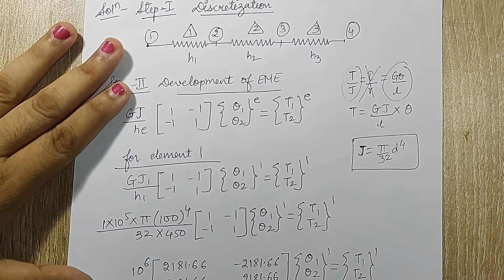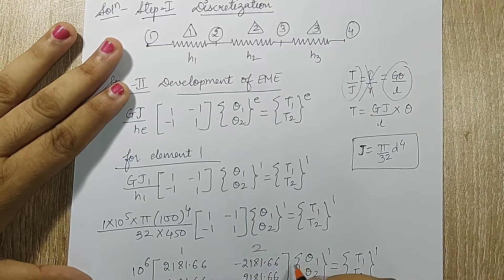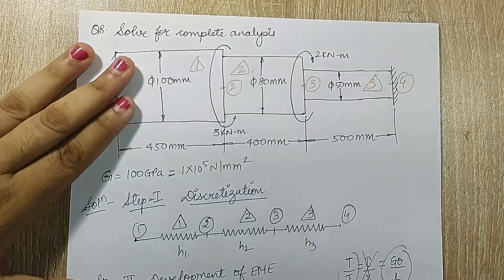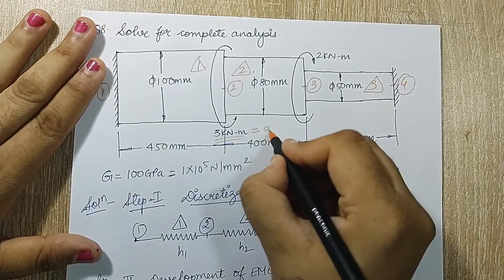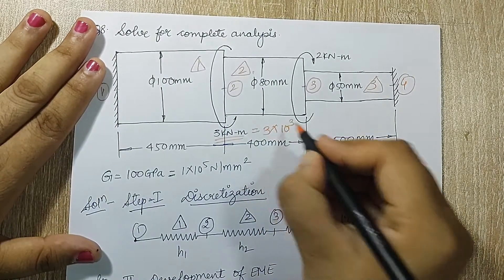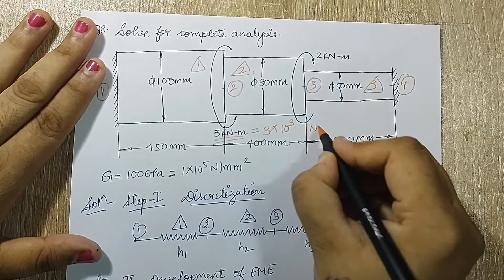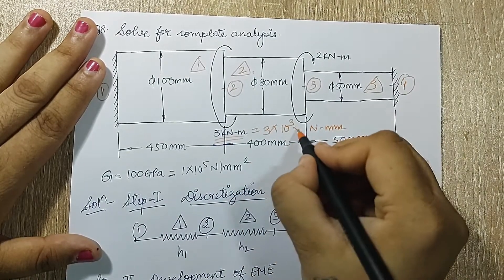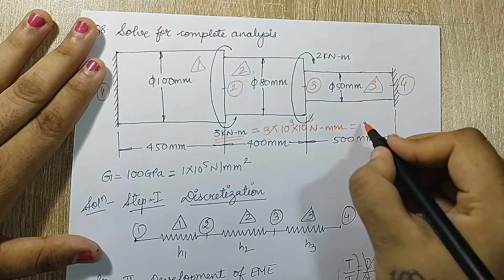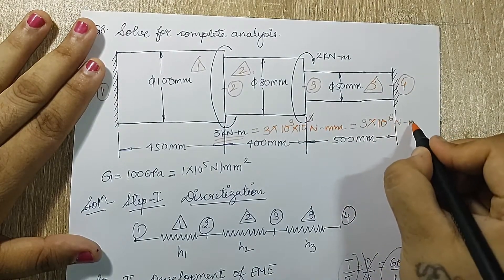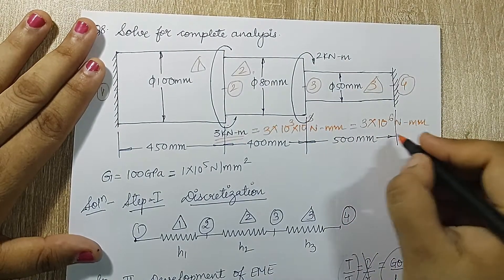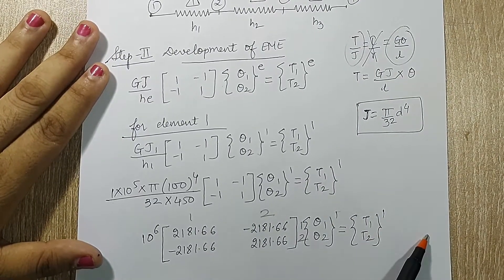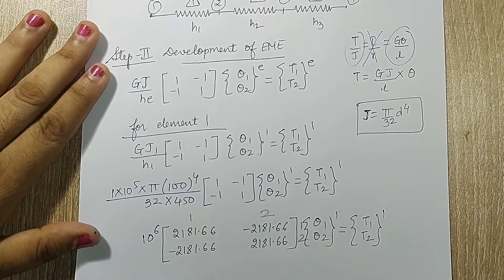Element 1 is between nodes 1 and 2. To explain why 10 raised to 6 was taken common: if I solve this I get 3 into 10 raised to 3 Newton. Converting to Newton-mm, kilonewton to Newton is 10 raised to 3, and meter to mm is another 10 raised to 3, making it 3 into 10 raised to 6 Newton-mm. So when I substitute the torque on the right-hand side, I cancel out 10 raised to 6, which is why it was taken common.